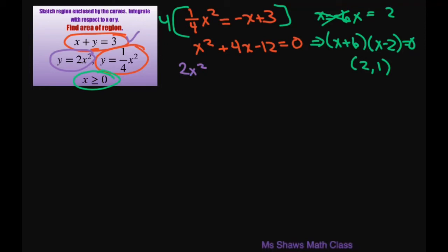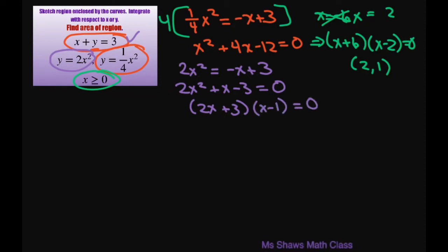That's 2x squared equals negative x plus 3, which gives you 2x squared plus x minus 3 equals 0. Therefore you get 2x plus 3 times x minus 1 equals 0. This one gives you a negative number, so we don't want that — we have x equals 1. So if x is 1 and you substitute it back in, you're going to get 2 for your y.